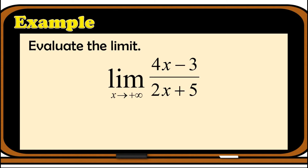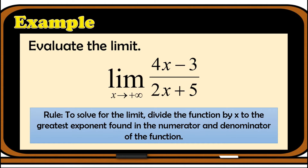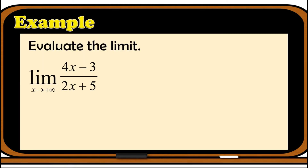How about this problem: evaluate the limit of (4x - 3)/(2x + 5) as x approaches positive infinity. We already have binomials here. The rule is we need to divide the function by x raised to the greatest exponent found in the numerator and denominator. In this case the exponent of x is 1 in both numerator and denominator, so we divide all terms by x.